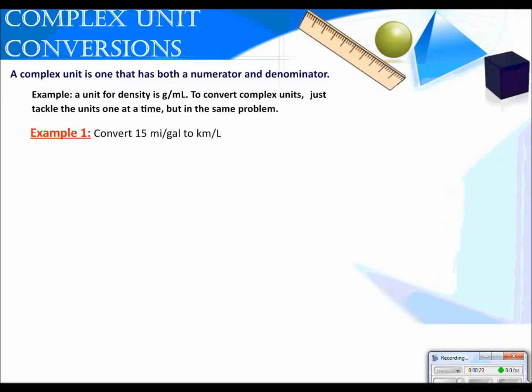A complex unit is one that has both a numerator and a denominator. In the last video, our givens only had a numerator. For example, a unit for density is grams per milliliter. To convert complex units, just tackle the units one at a time but in the same problem.